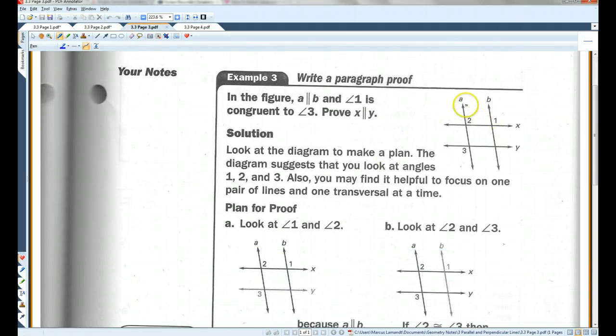In the figure, A is parallel to B. I'm going to draw little arrows for that. And angle 1 is congruent to angle 3. Prove that X is parallel to Y. Okay. So, look at the diagram to make a plan.